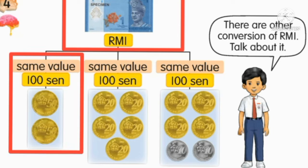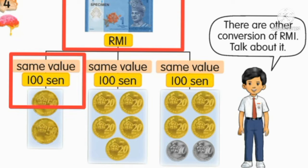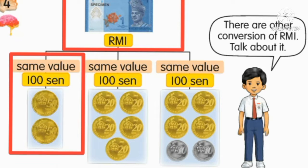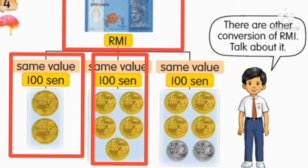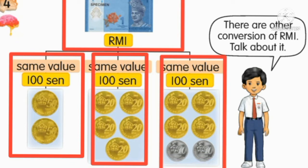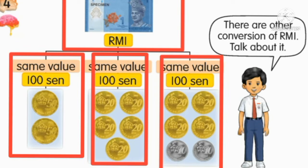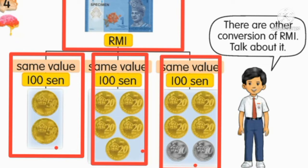Here we have five 20 cents. Here we have four 20 cents and two 10 cents. All of this is equal to 100 cents. 100 cents is the same value as 1 ringgit.